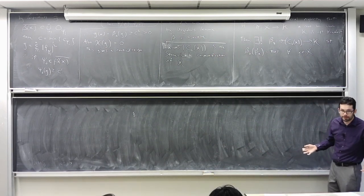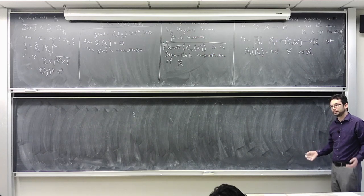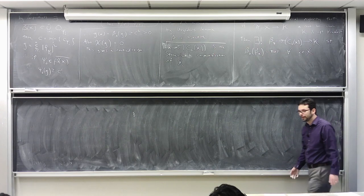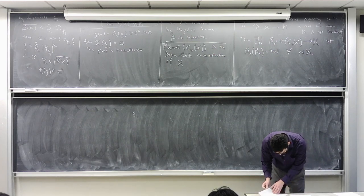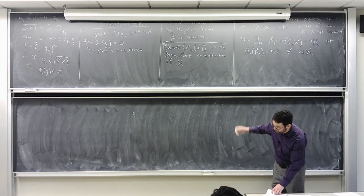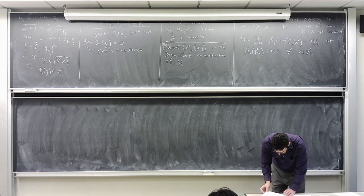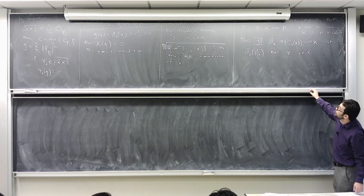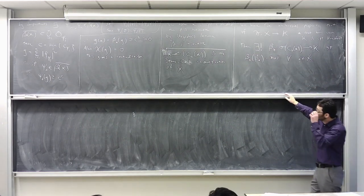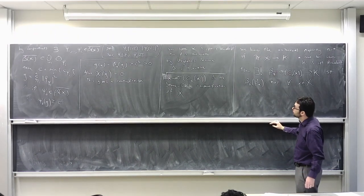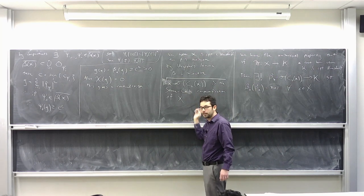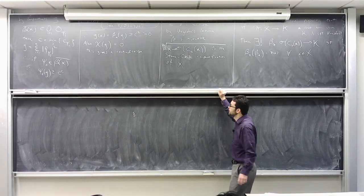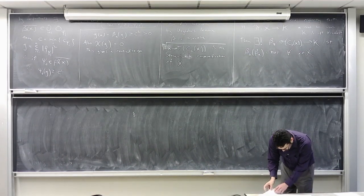As a corollary: if X and Y are compact Hausdorff spaces, then C(X) is isomorphic to C(Y) as C-star algebras if and only if X is homeomorphic to Y. In general, any homeomorphism between compact Hausdorff spaces gives a star-isomorphism of the corresponding algebras, and you get a functor from the category of compact Hausdorff spaces to the category of abelian C-star algebras.